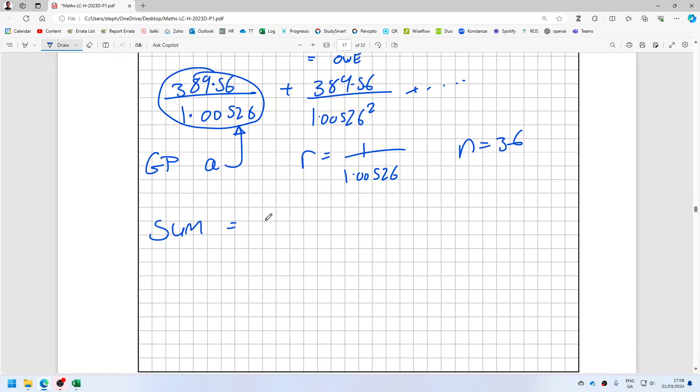389.56 divided by 1.00526 times 1 minus 1 over 1.00526 to the power 36, over 1 minus 1 over 1.00526. So that is twelve thousand seven hundred and forty-five ninety-two.